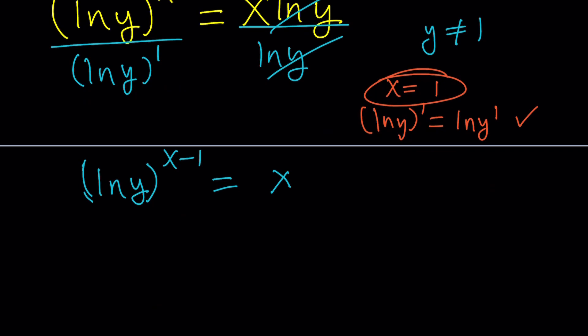So here's what we're going to do. We're going to assume x does not equal 1, and we're going to raise both sides to the power 1 over x minus 1. And then these two are reciprocals. They're going to cancel out as long as x minus 1 does not equal 0. And we get ln y equals x to the power 1 over x minus 1. Isn't that interesting? We got this relationship.